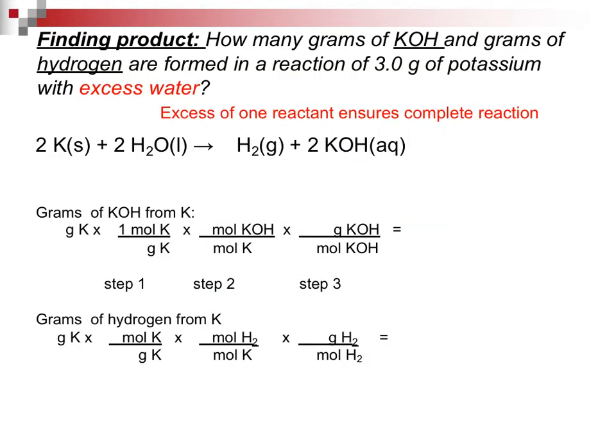Now we do a calculation, and I call it finding product. We're trying to find hydrogen and potassium hydroxide. We are given grams of potassium, and I put in red excess water. When you have an excess of a reactant, it assumes that the reaction will go to completion. We want to find how much KOH we can make and how much hydrogen we can make. We do it separately.